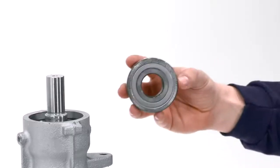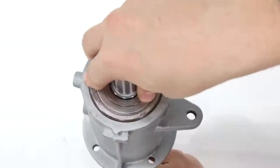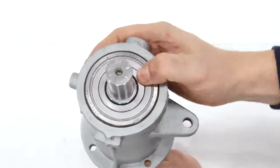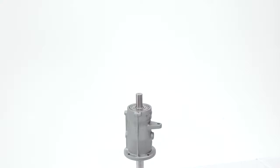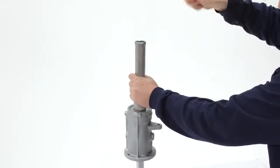Add the second bearing onto the shaft and into the top of the housing. Use an adapter and hammer if necessary to keep pressure on the inner race of the bearing as you guide it a little further onto the shaft.